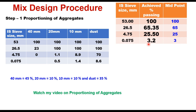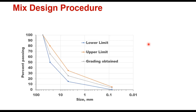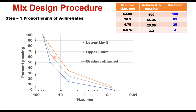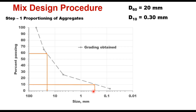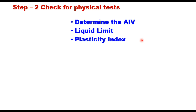Once aggregates are proportioned, plot the final grading to verify it falls between the upper and lower grading limits, and use the curve to determine the coefficient of uniformity. For example, if D60 = 20 mm and D10 = 0.3 mm, then CU = 20/0.3 = 66.7, which satisfies the requirement of being greater than 5. Additionally, carry out physical property tests — aggregate impact value, liquid limit, and plasticity index — on material passing the 425-micron sieve, and confirm all values are within permissible limits.